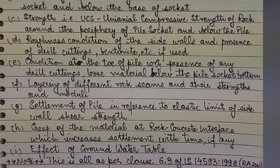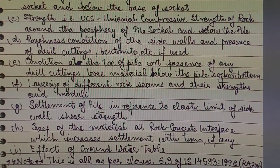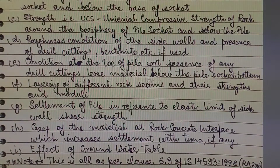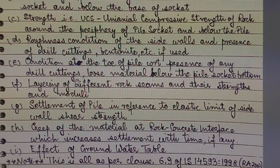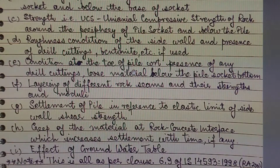Factor E is the condition at the toe of the pile — specifically the presence of any drill cuttings or loose material below the pile socket bottom. If our pile does not directly touch the rock at the bottom and loose material or drill cuttings are present, that may affect the end bearing component of the pile.